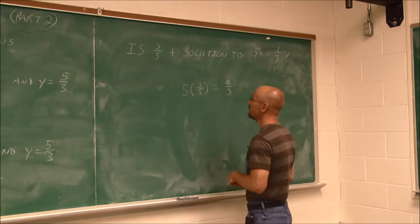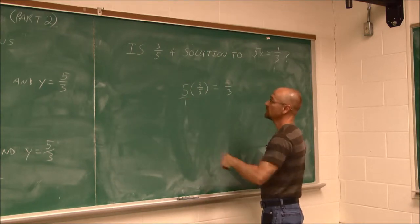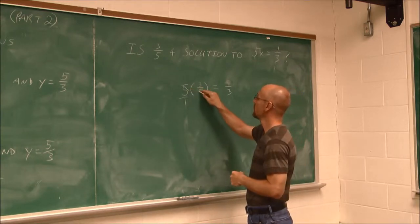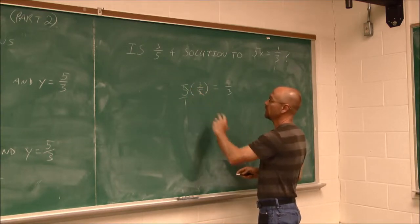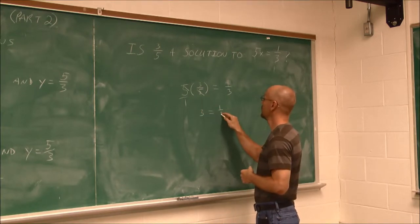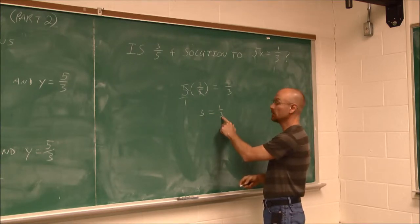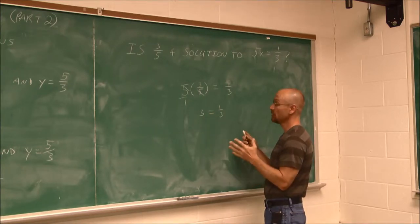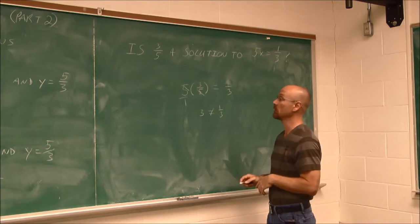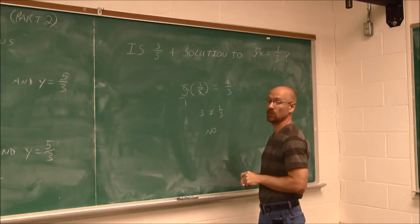I can think of this 5 as being 5 over 1, so we have 5 over 5, and that can reduce. So we get 3 over 1, which is just 3. And we see 3 is not equal to 1 third — these are actually reciprocals, they're not equal to each other. So this is not a true statement. Is 3 fifths a solution? No, 3 fifths is not a solution.